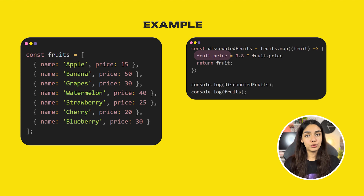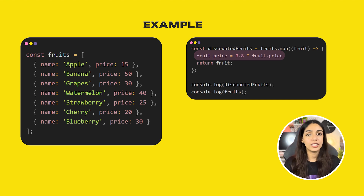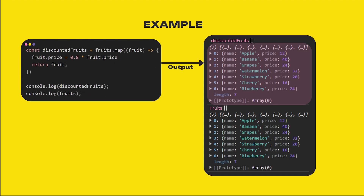The callback accepts a fruit object, sets fruit.price = 0.8 * fruit.price (80% of the existing price since we're giving a 20% discount), then returns the updated fruit. If you print discountedFruits you'll see all prices are discounted — but if you print fruits, you'll see the original array was also updated, because objects are passed by reference.